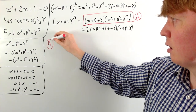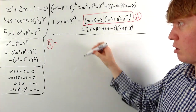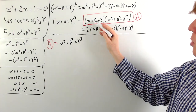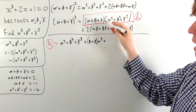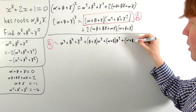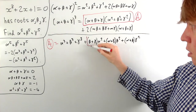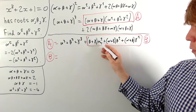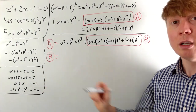Labeling the first right-hand side product as A, expanding gives the sum of cubes alpha cubed plus beta cubed plus gamma cubed, plus extra terms labeled B: beta plus gamma times alpha squared, plus alpha plus gamma times beta squared, plus alpha plus beta times gamma squared.